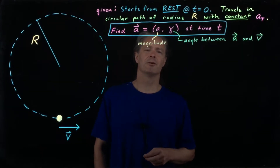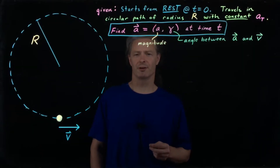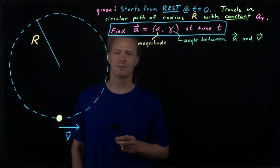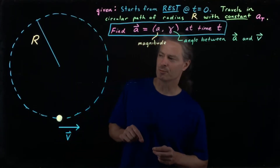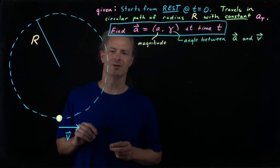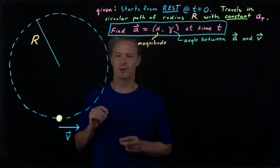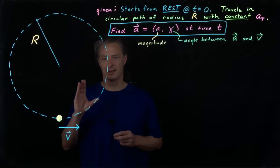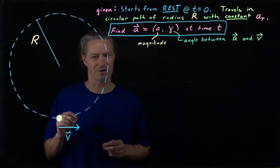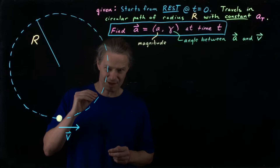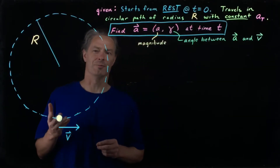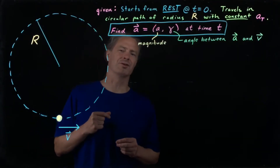In this video, I'm going to do a circular motion problem involving both centripetal and tangential acceleration. Any object moving in circular motion will have a centripetal acceleration — an acceleration component toward the center of the circle. Now, if the object in circular motion is also speeding up or slowing down, it will also have a tangential acceleration component, that is, a component of the acceleration that's tangent to the circular path.